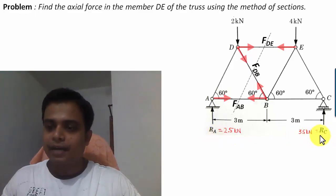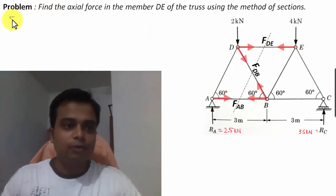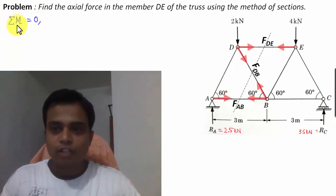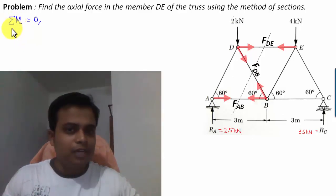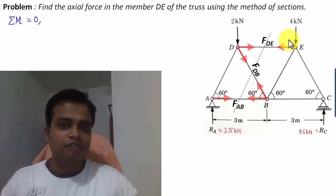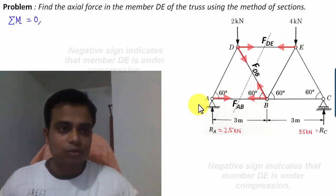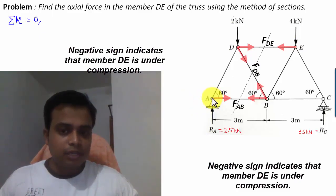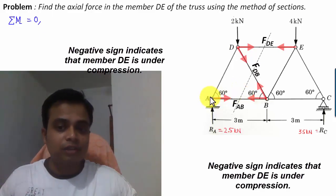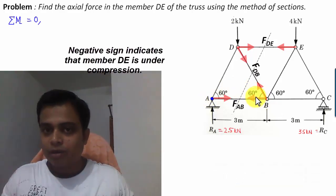We'll use the moment equation to find the axial forces. The moment equation must be framed about a specific point, and we have five options: A, B, C, D, and E. We'll use a hit-and-trial approach. If we take the moment about point A — which is to the left of the section — the forces to the right are to be considered. A key tip: it is better to have one equation with one unknown than one equation with two unknowns.